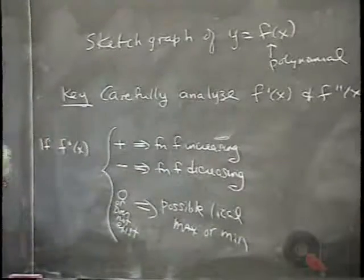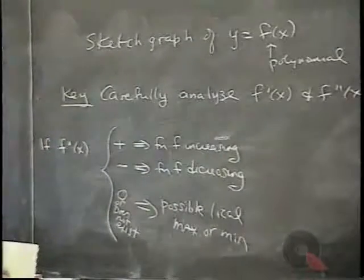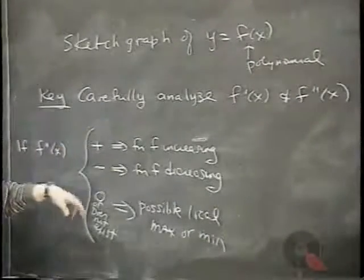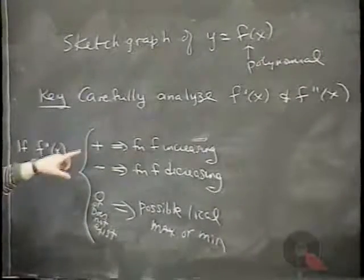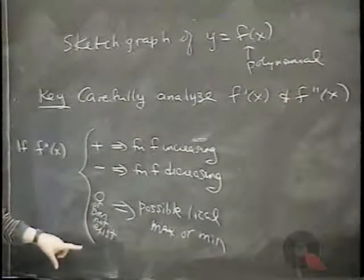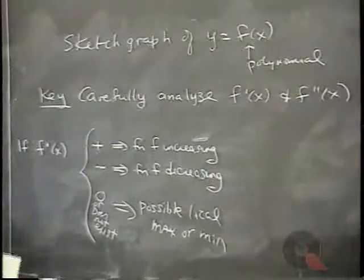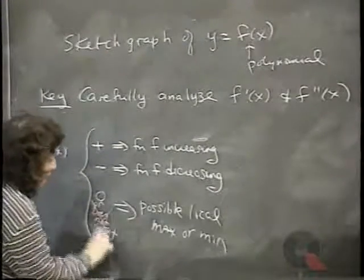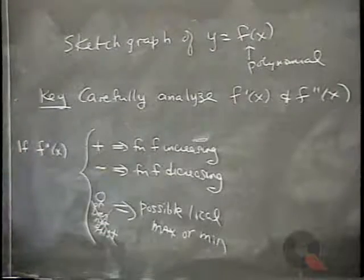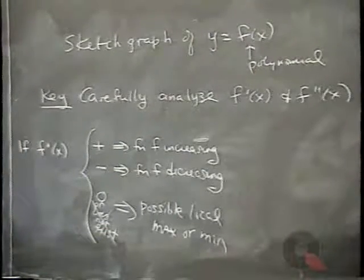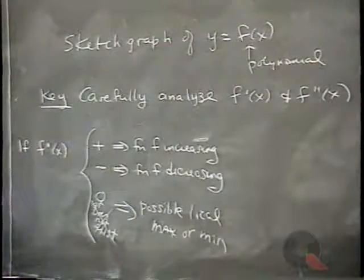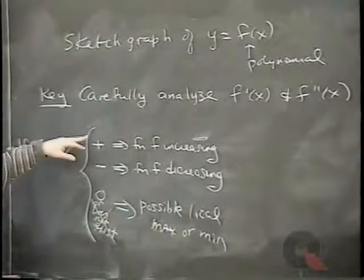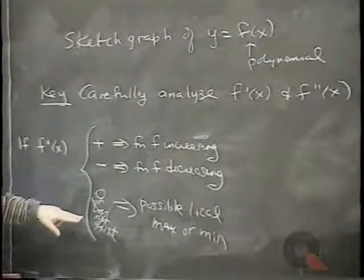Since we're talking about polynomial functions, we don't have to worry about the derivative not existing because polynomials are everywhere differentiable. So as long as we're sticking with polynomials, we're going to be concerned with where the derivative is positive, where it's negative, and where it's zero.